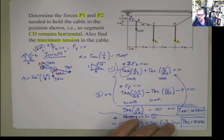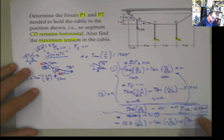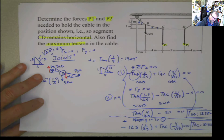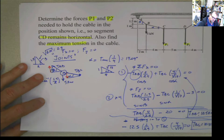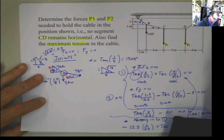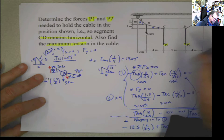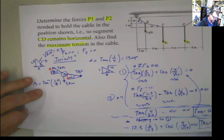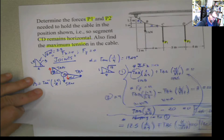Let me cut the music off because it's distracting me. OK, we have TAB and TBC. Now we can choose to move somewhere else. I can move to joint C. At joint C, what would be the unknowns? P1 is unknown, TCD is unknown, and I know TBC and I know the angle. So there are two unknowns, meaning I can move to that joint.